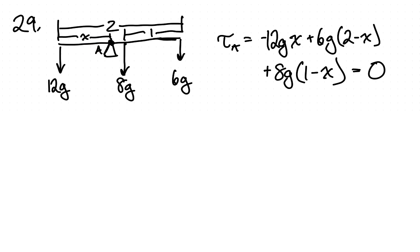So what do we get? I'm calling clockwise positive. So we have a counterclockwise moment 12g times x, so that's minus 12g times x.